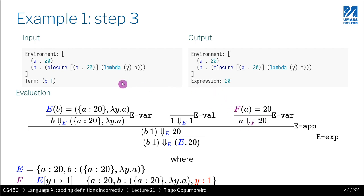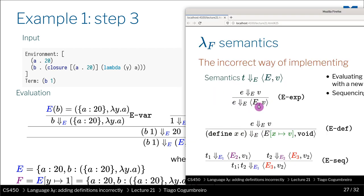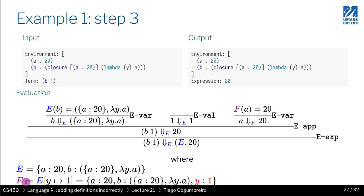We evaluate `a` in environment `F`. Since `a` is a variable, we do a lookup: `a → 20`, so evaluating `a` returns 20. When I call this function I should return the same initial environment unchanged, and the value 20. The rule for function calls returns the environment unchanged — it's the initial environment that is returned, not the environment used inside the function body.